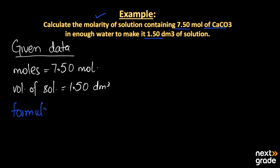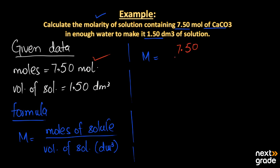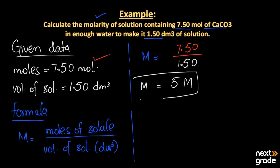Applying the formula — molarity = moles of solute divided by volume of solution in dm³ — we put in the values: 7.50 divided by 1.50. By dividing these values, the answer is 5 molar. So the molarity of the solution is 5 M.